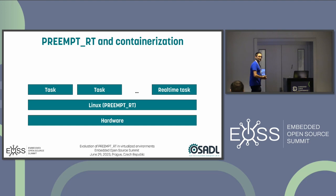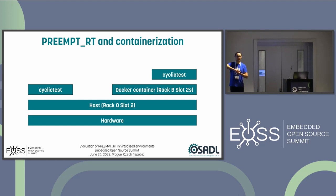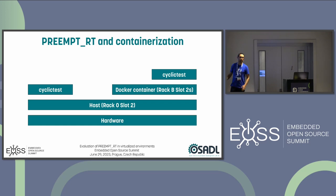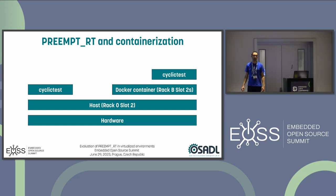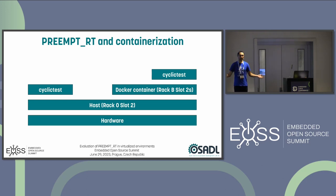Since a real-time task is just another Linux task, and a container is simply a set of processes running in an isolated environment, any process inside a container can have real-time priority — there's no problem with that. To evaluate the real-time behavior, we took one system from our QA farm where we do latency monitoring on roughly 200 boards. You can access these systems at osadl.org — QA farm real-time, rack 0 slot 2. On this hardware, we put a Docker container and ran the cyclic test tool on both host and container.